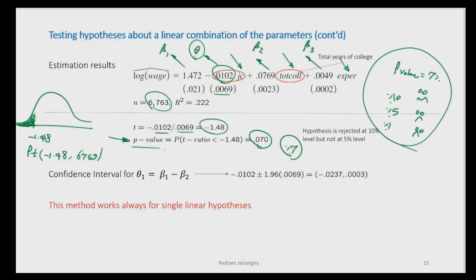This may seem like a lot, but practice makes it intuitive — you'll be able to quickly interpret these numbers. Remember: at the end of the day, you want to make a statement about the entire population, and whether that statement is valid depends on whether your one sample result is statistically significant. We can also construct a confidence interval for theta: at 5 percent, the 95% confidence interval contains zero, which is consistent with failing to reject the null at that level.